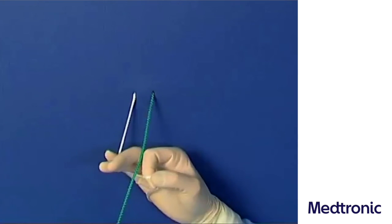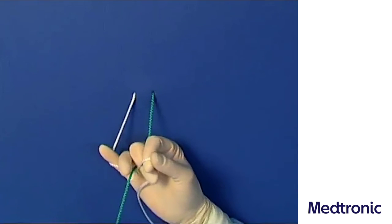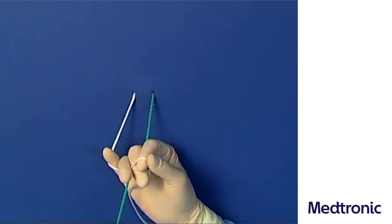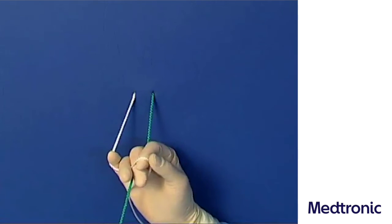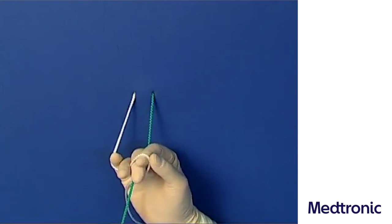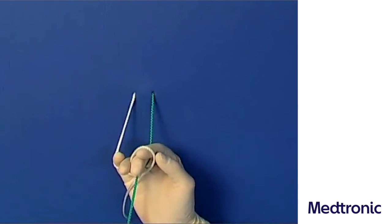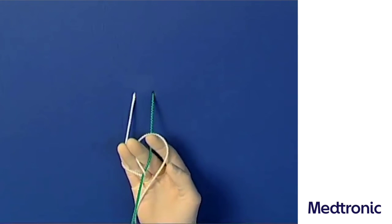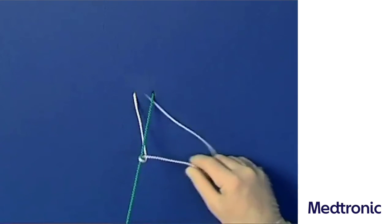The right hand describes a supination movement and crosses under the pulling thread. It is led underneath the tying thread using the middle finger, and the tying thread is then clamped between the index and ring fingers. The tying thread is thus pulled through the produced loop.